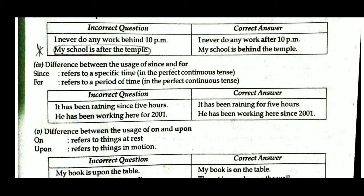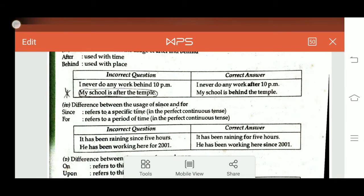Difference between 'since' and 'for' — very important. 'Since' refers to a specific point in time; 'for' refers to a period/duration of time (both used in perfect continuous tense). 'It has been raining since 5 hours' is incorrect — since it refers to a duration, correct is 'It has been raining for 5 hours.' 'He has been working here for 2001' is incorrect — since 2001 is a specific time, correct is 'He has been working here since 2001.'